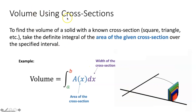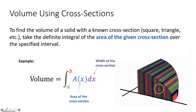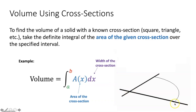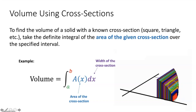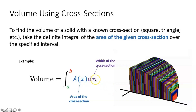Next we're going to quickly review finding volume using cross sections. To find the volume of a solid with a known cross section — like a square, triangle, etc. — take the definite integral of the area of the given cross section over the specified interval. If we integrate the area formula for a rectangle on a given interval, it will give the exact volume of a three-dimensional solid with rectangular cross sections. This is similar to finding exact area under the curve — we're adding up the areas of an infinite amount of rectangles; here we're adding the volumes of an infinite amount of rectangular prisms with width dx.